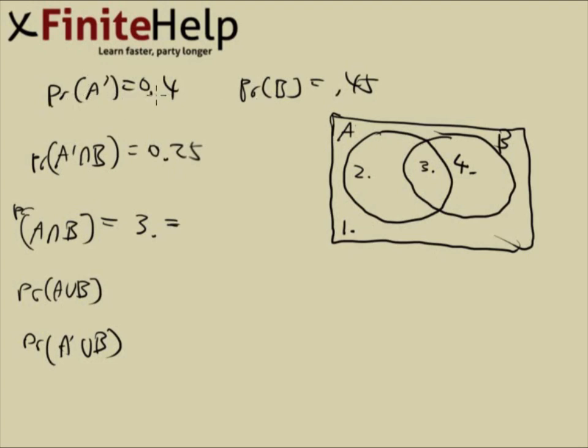Here we have A prime is 0.4, so that means one and four add together is 0.4, but we don't know which is which, so we can't write down anything. B is the same way. We know three and four add together is that, but we don't know which one's which. We do know that A prime